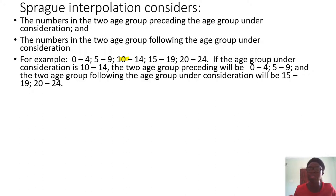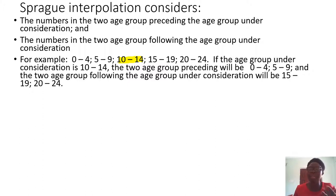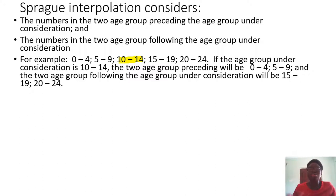Assuming 10 to 14 is the age group we are considering, you may want to bring out the total number of students aged 11 or 12. From 10 to 14, you have ages 10, 11, 12, 13, and 14. But this time you are not interested in all of them together — you are interested in a particular single age. So you look at whether it is 10, 11, 12, 13, and so on.